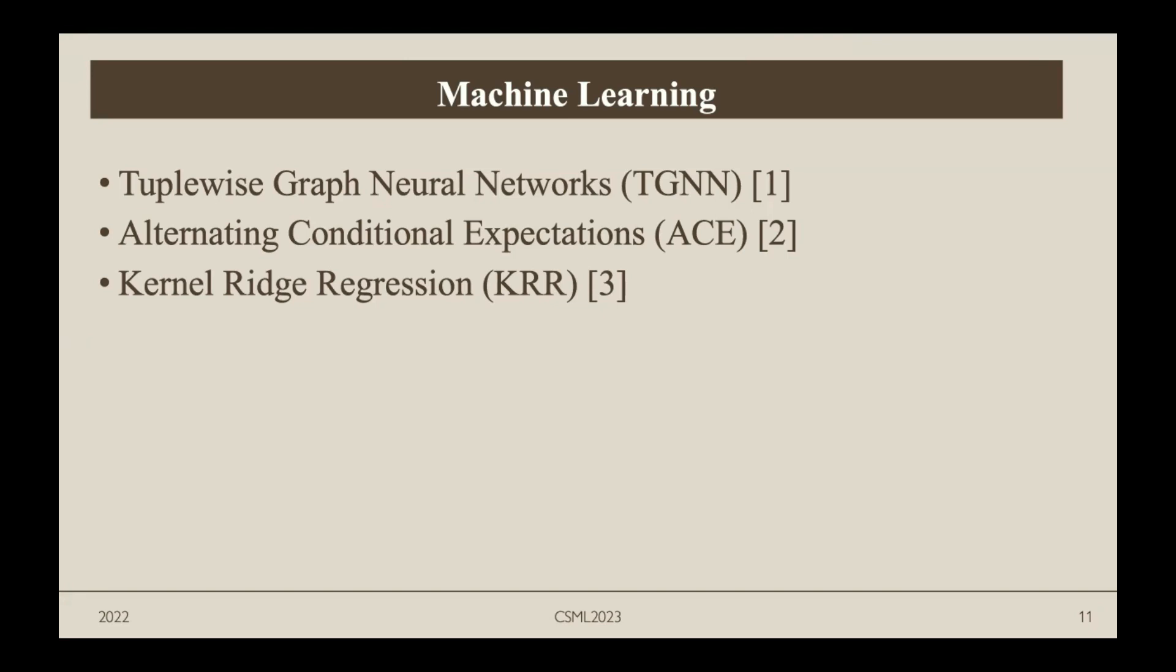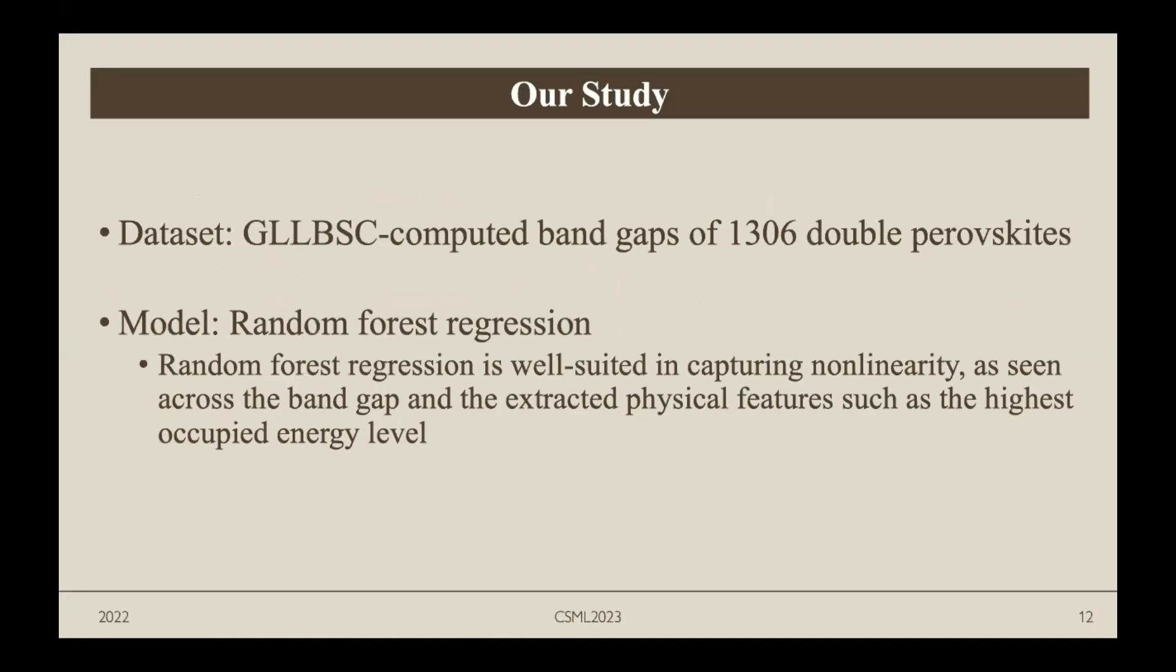We can see that using machine learning methods to predict band gaps of different materials is becoming a very trendy research topic. In our study, we chose to use a dataset of GLLB-SC computed band gaps of 1306 double perovskites. The model we decided to use is random forest regression because it's very well suited in capturing the non-linearity as seen across the band gap and the extracted physical features such as the highest occupied energy level.